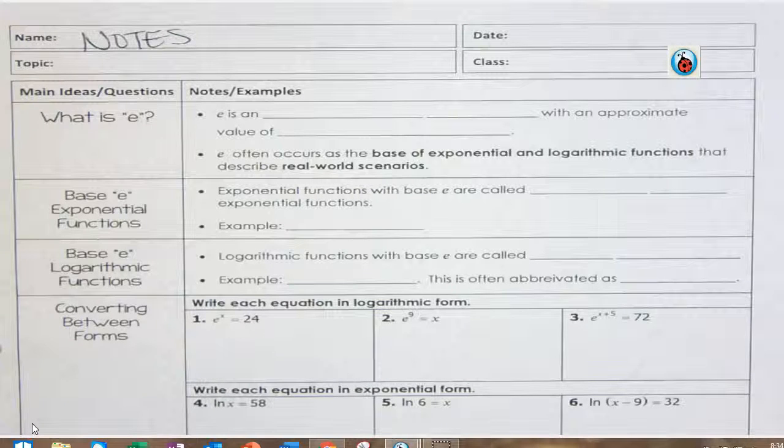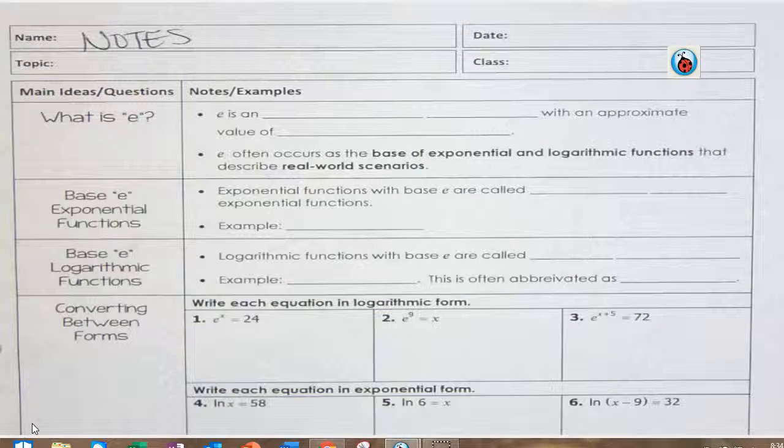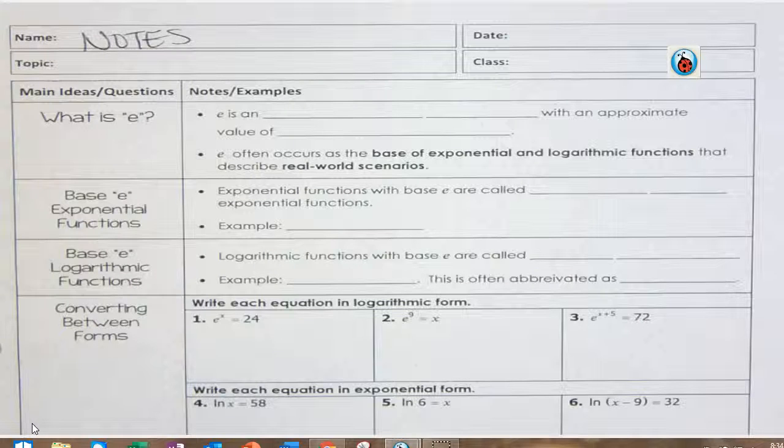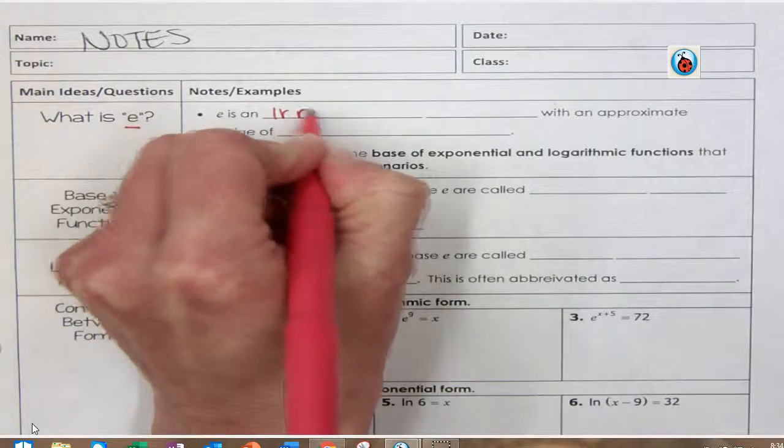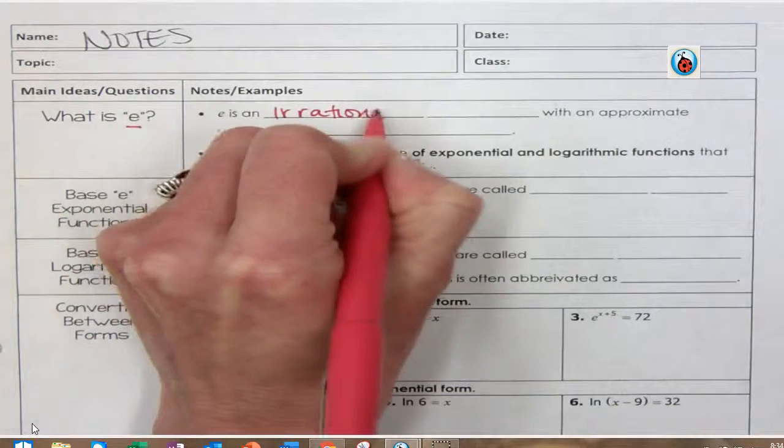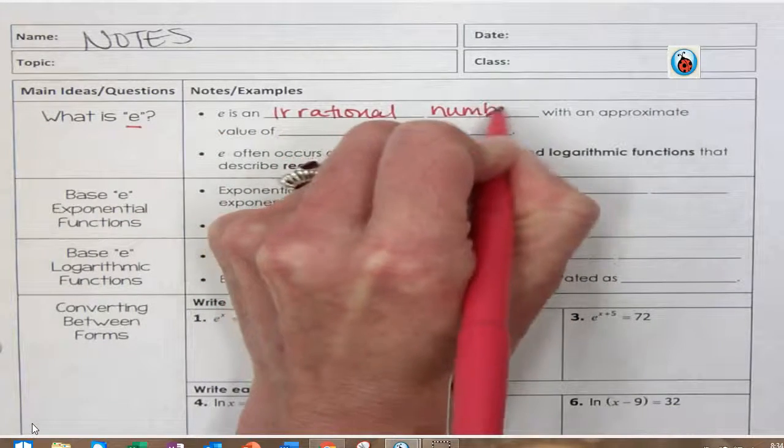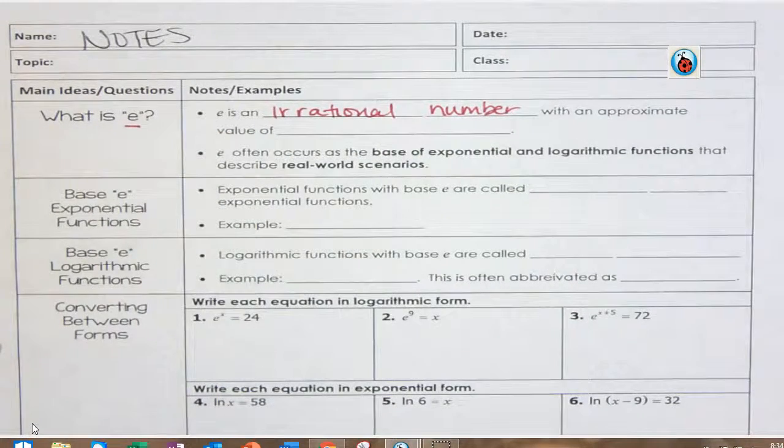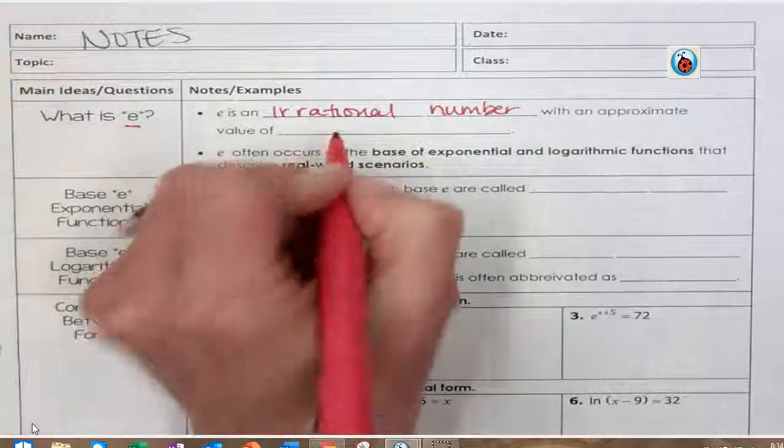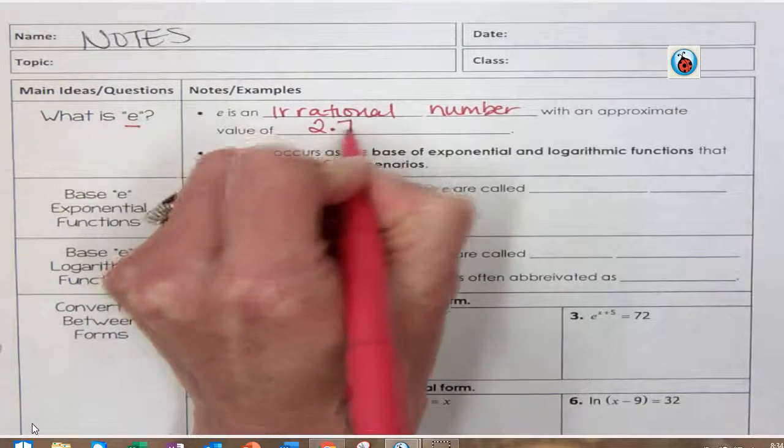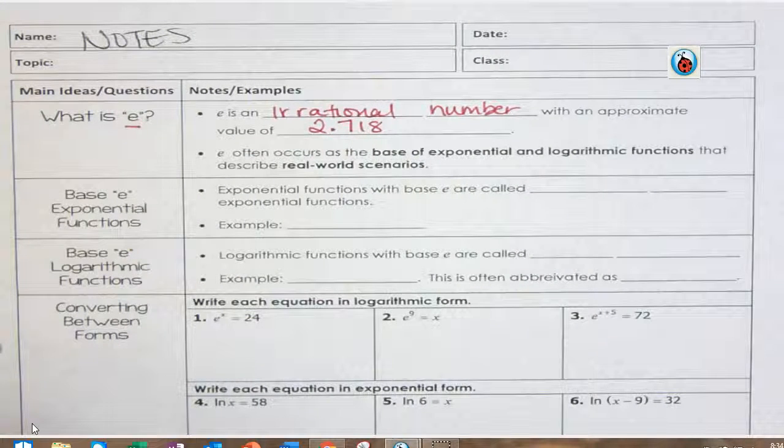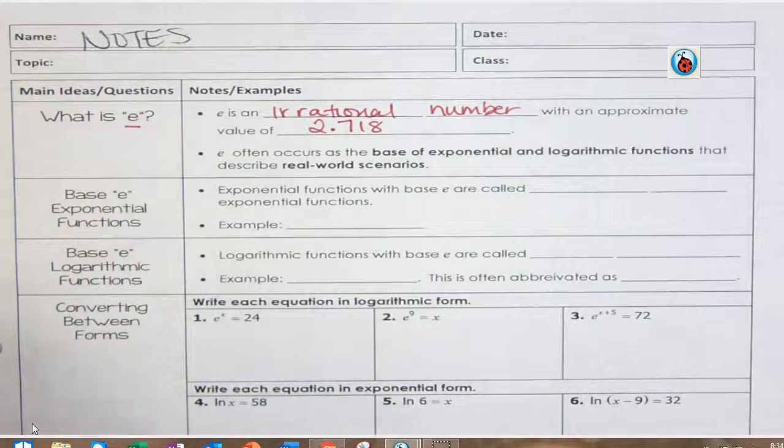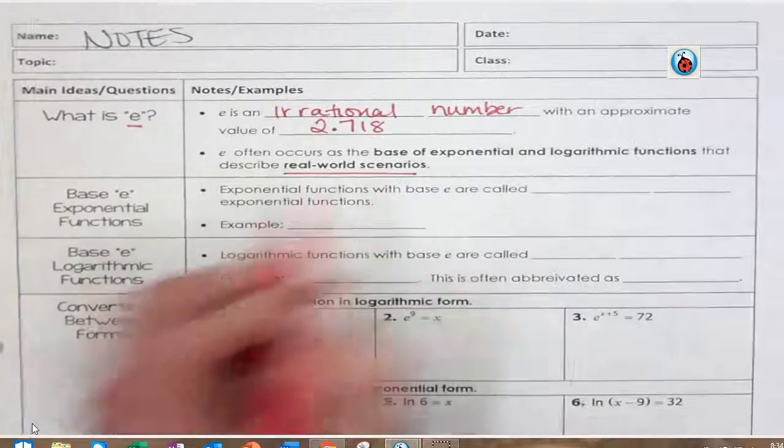Okay guys, here is the notes from the natural logs. So when we talk about E, E is basically an irrational number with an approximate value of 2.718, and it basically occurs at the base of exponential logarithmic functions that have real-world scenarios.